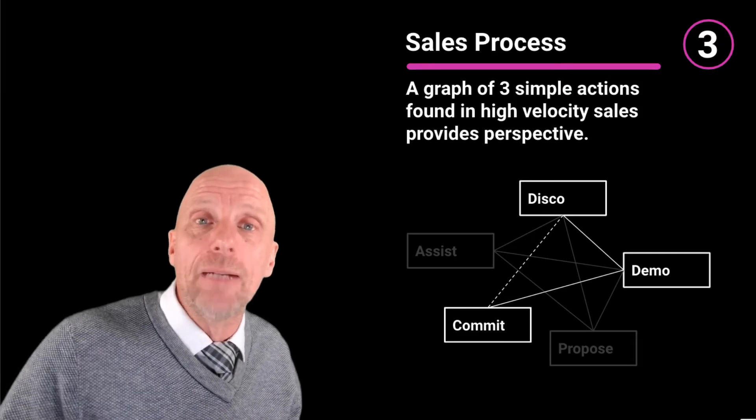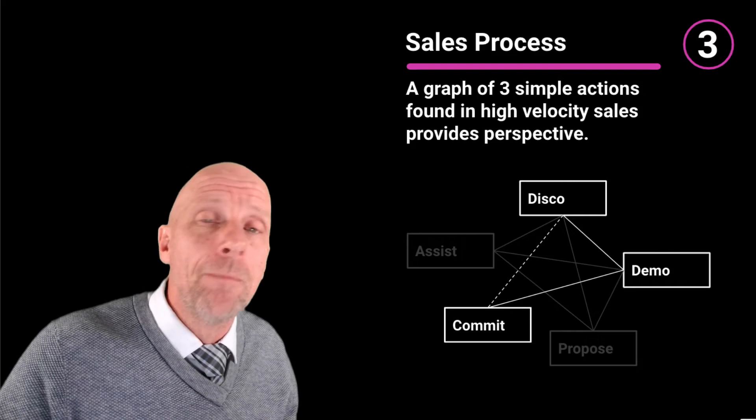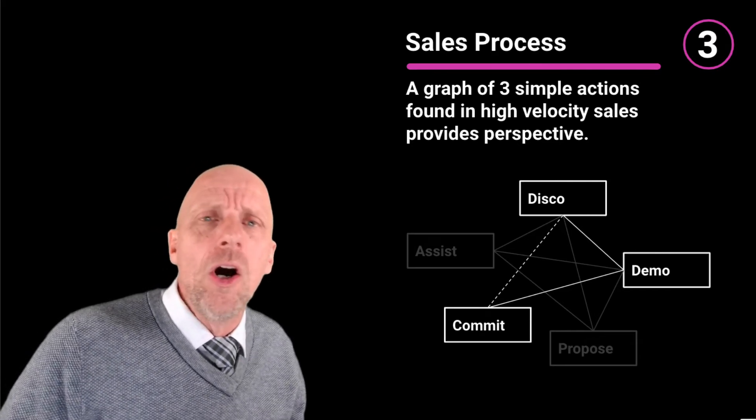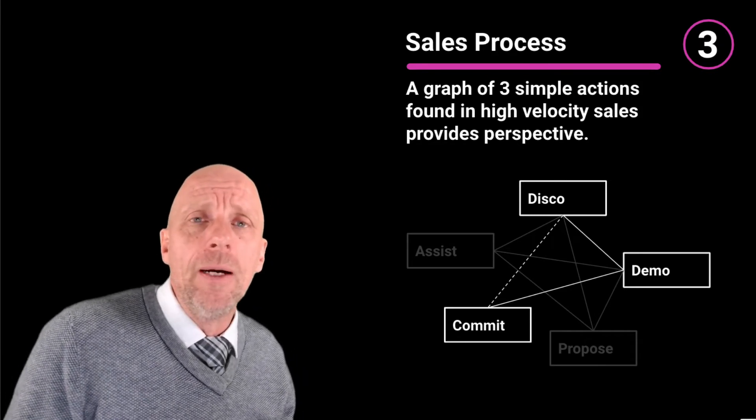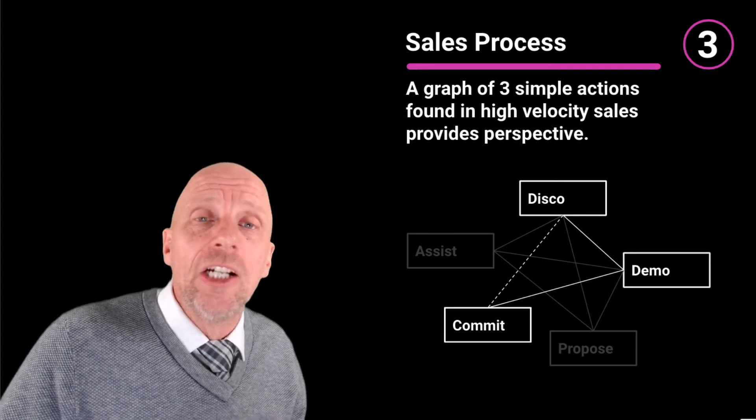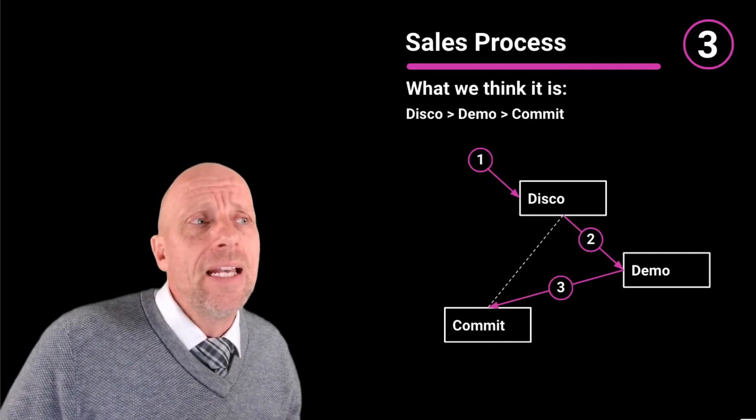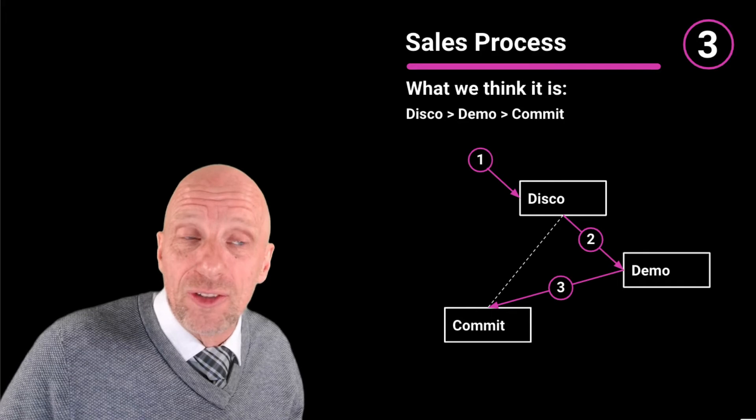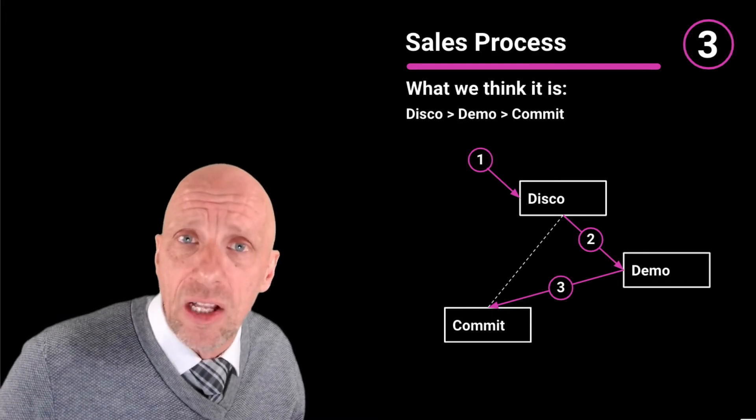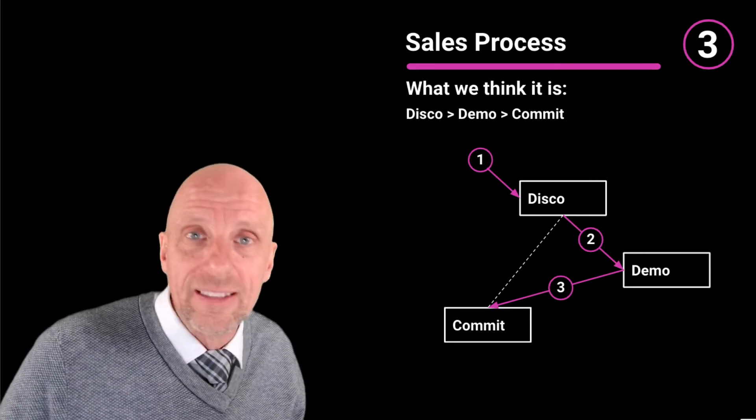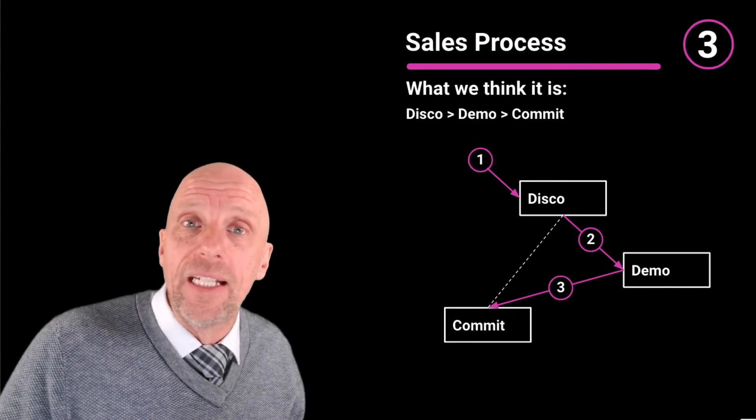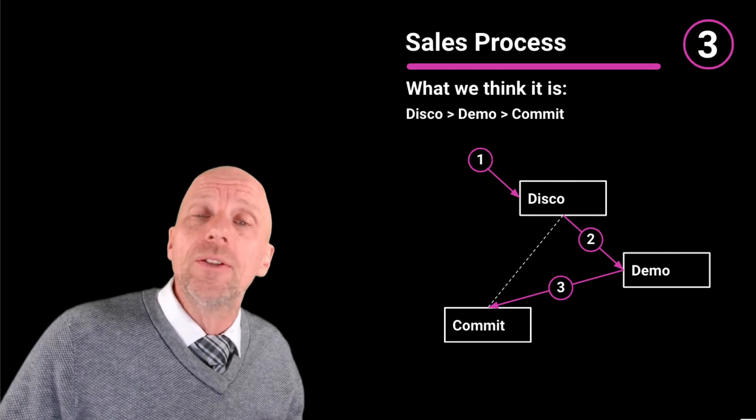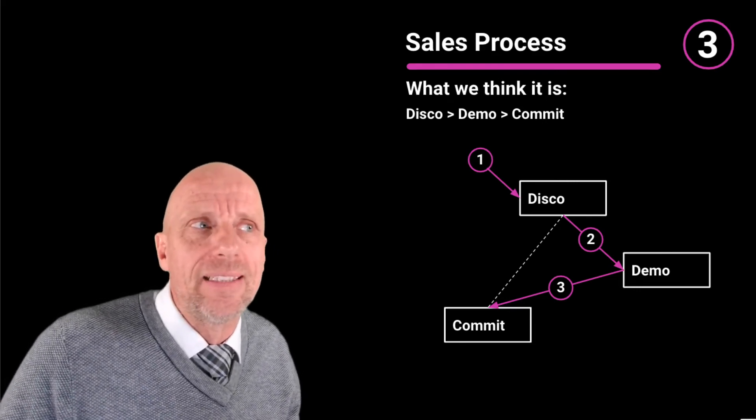I'm going to take a look at three simple actions in a high-velocity environment. I'm going to describe these actions as disco, demo, commit. Where many of you will trip up is to think that disco is a separate meeting from demo. Do I need to first do a thirty-minute disco and then next week I do a thirty-minute demo? Many enterprise sales reps have been trained to not give a demo until you understand the customer's requirements. Many of us have been conditioned to think first do discovery, then demonstrate, then gain the commitment. I don't want you to think these as independent meetings. You can see them as the same meeting.